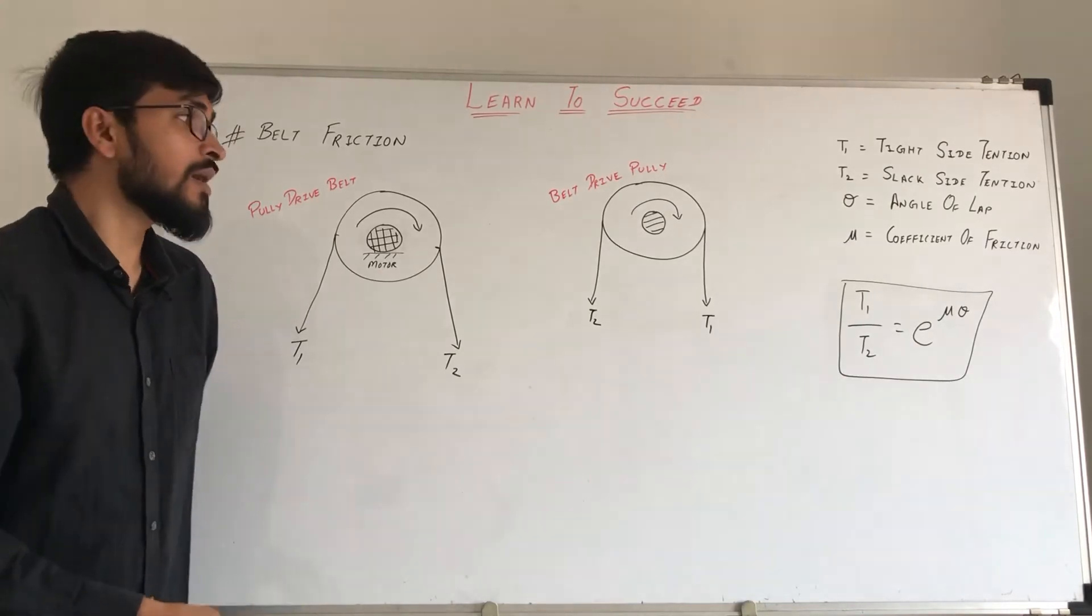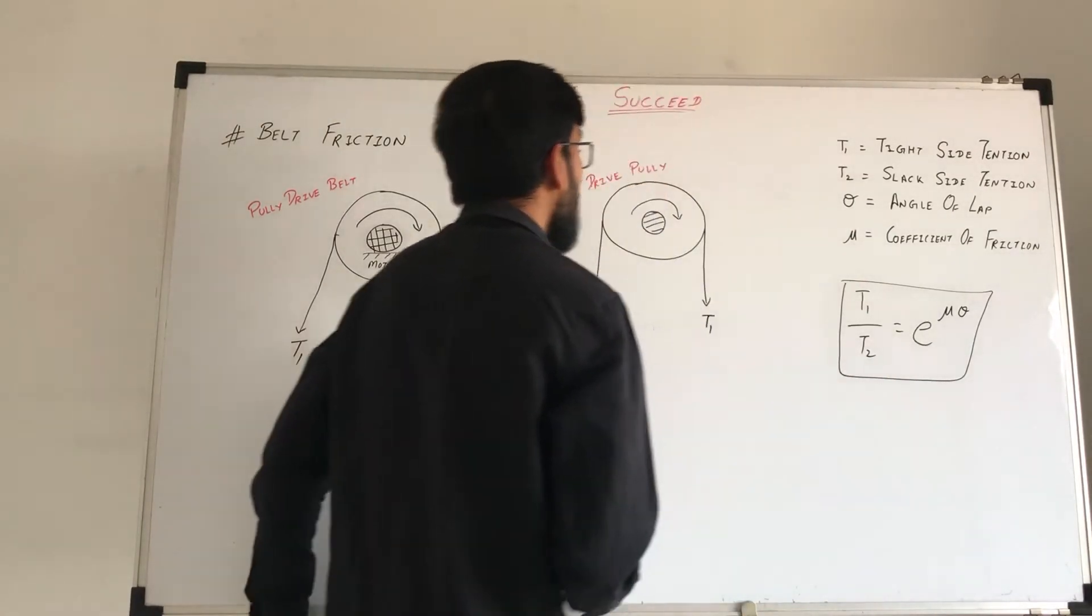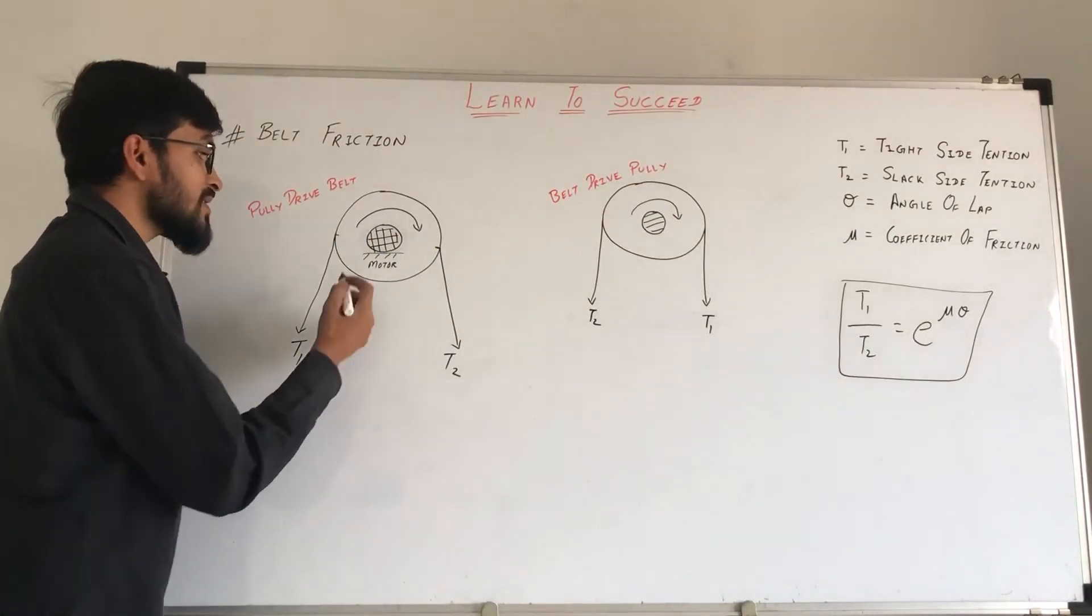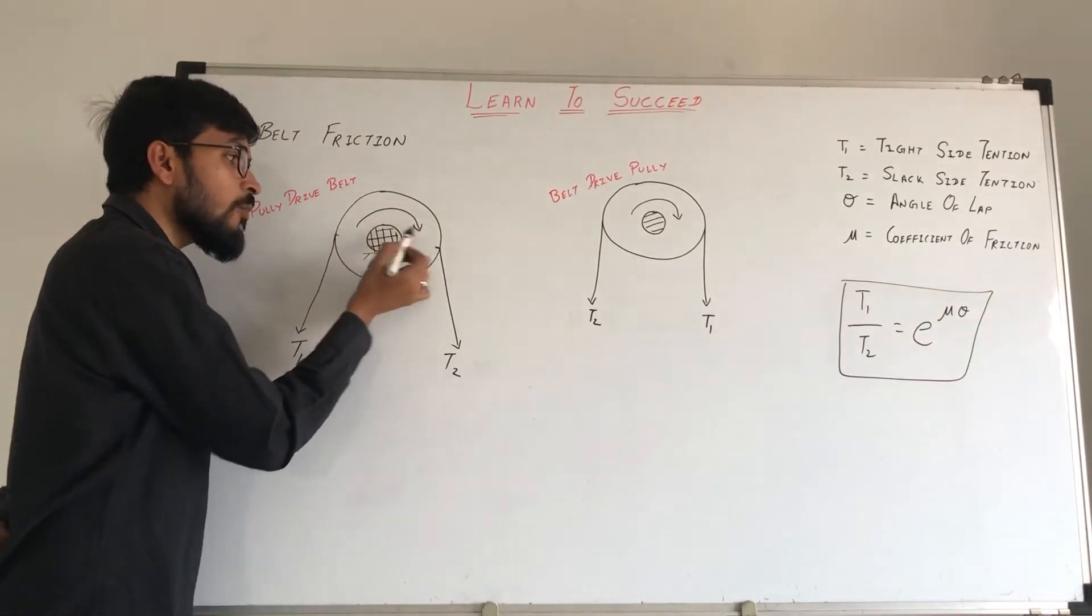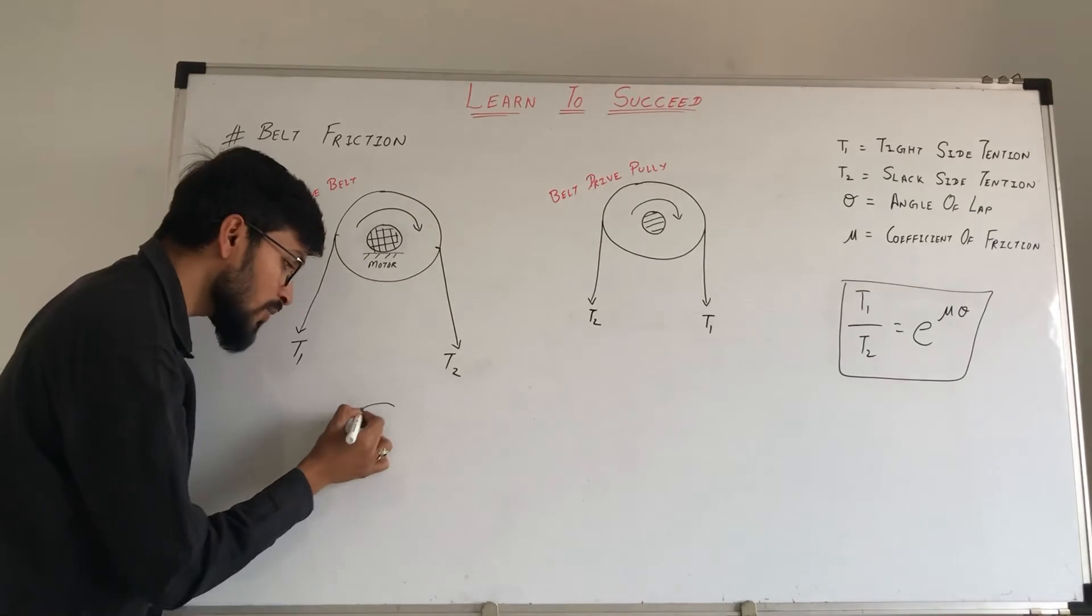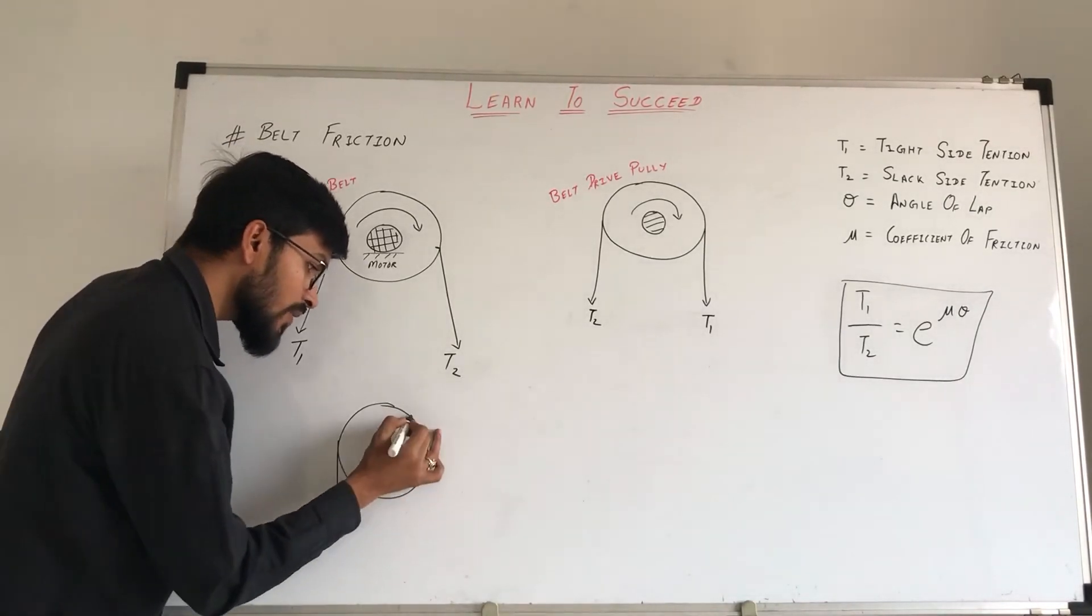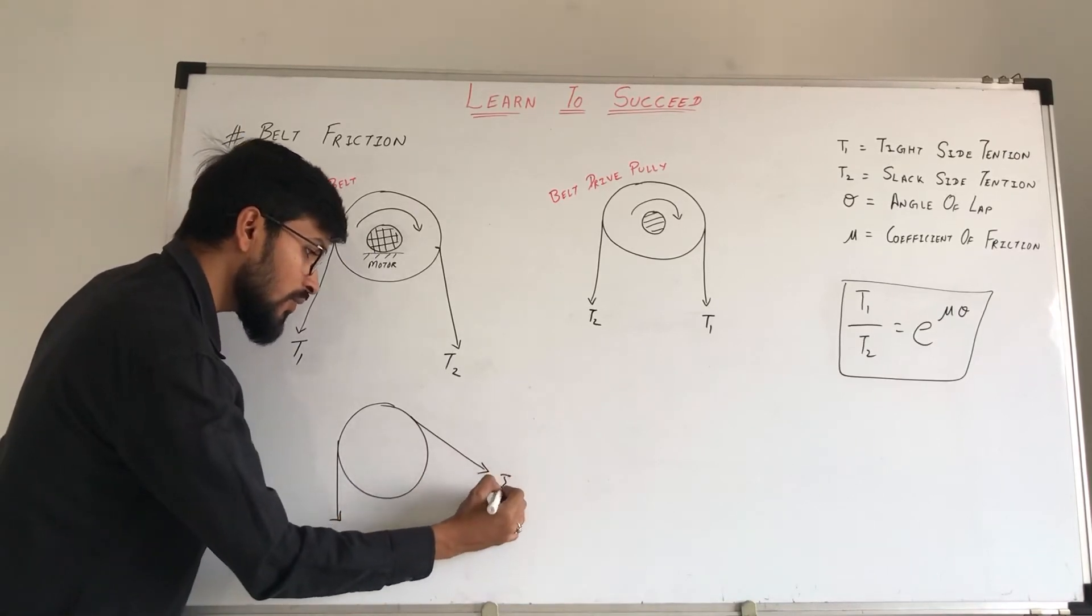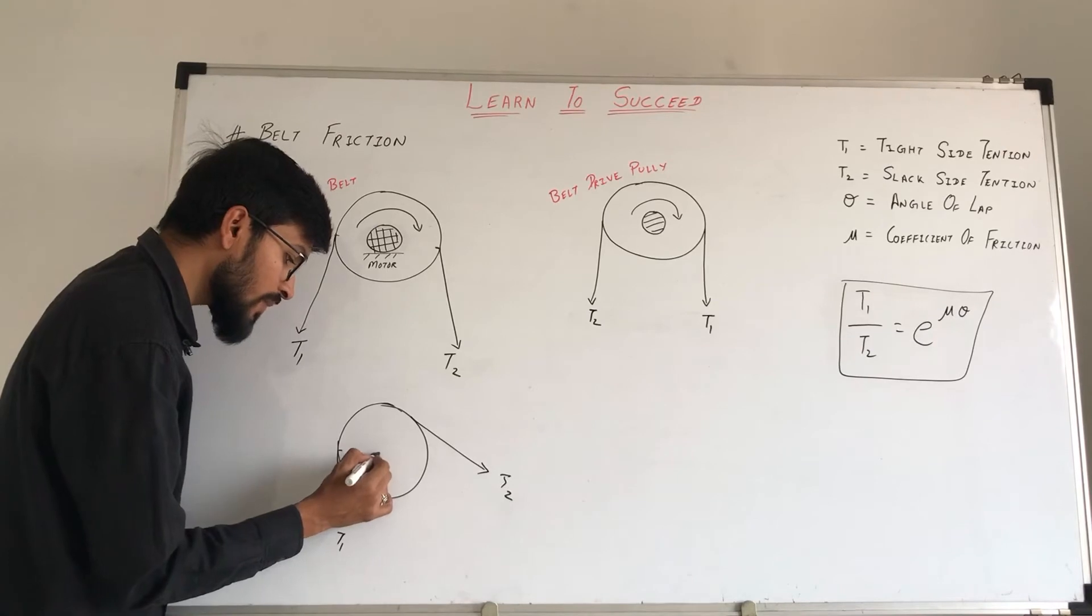Here we have angle of lap. What is angle of lap? Angle of lap is where you have contact with your belt. Where the contact is, it's the whole angle of lap. Suppose you have a pulley and you have a belt. And this is T1 and this is T2. Where is the contact from?